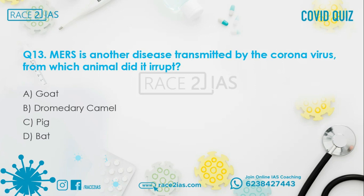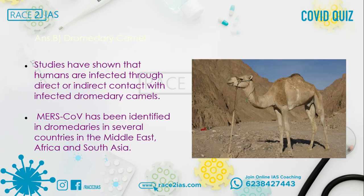Question number 13: MERS is another disease transmitted by coronavirus. From which animal did it erupt? Option A: Goat. Option B: Dromedary camel. Option C: Pig. Option D: Bat. The right answer is dromedary camel. Studies have shown that humans are infected through direct or indirect contact with infected dromedary camels. MERS-CoV has been identified in dromedaries in several countries in the Middle East, Africa, and South Asia.